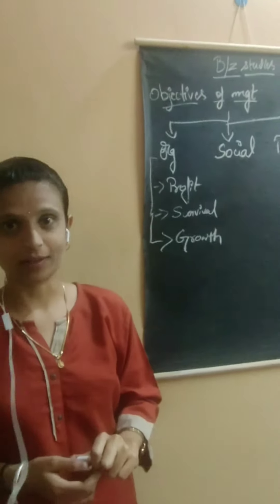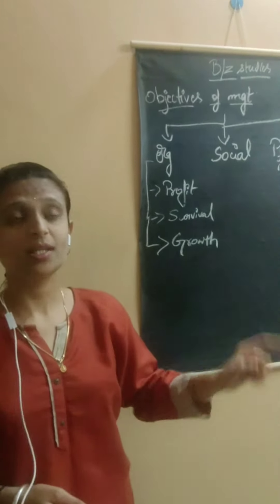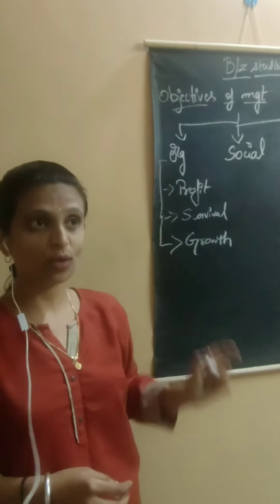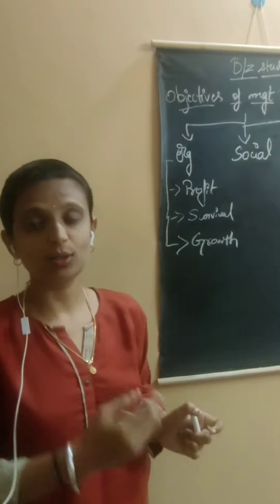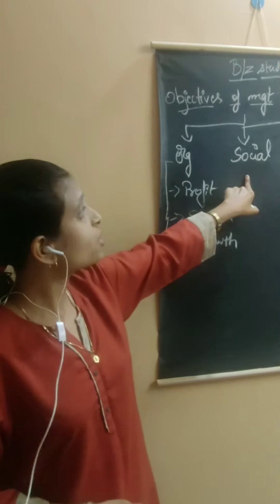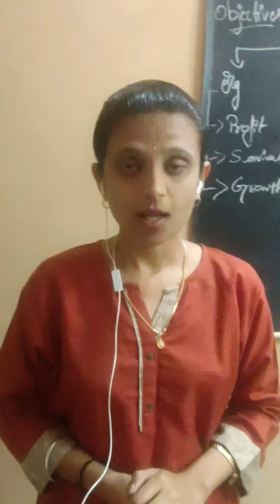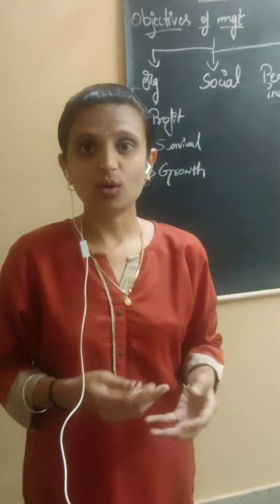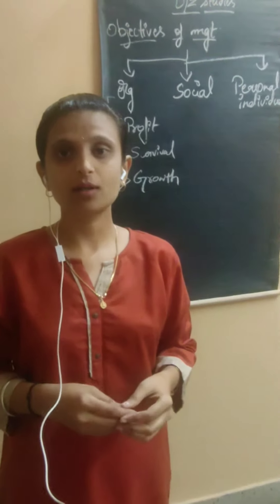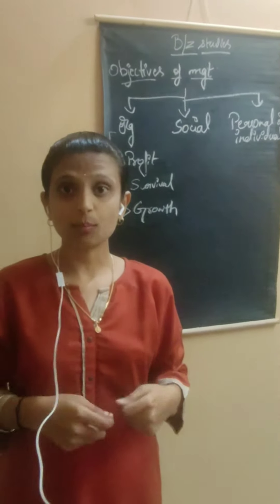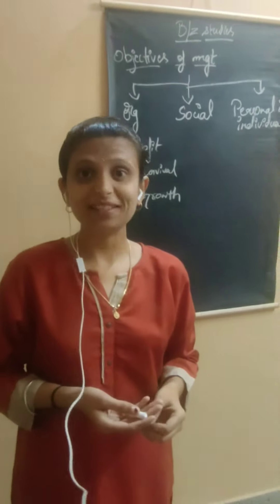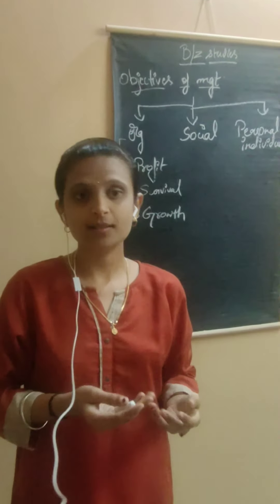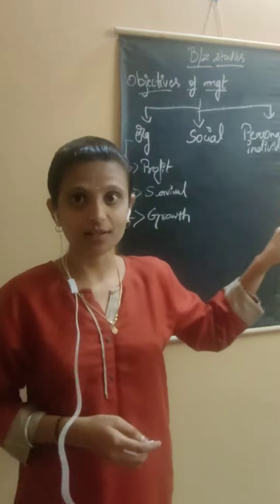The next one is social objective. Every organization is a part of society, so the organization has to contribute some percentage of profit to the society. Social objectives are also important objectives of management. Some of the social objectives include using environmentally friendly methods of production, creating employment opportunities, providing some percentage of profit to noble causes or to the government for projects, providing financial support to the society, or building amenities like schools or toilets.